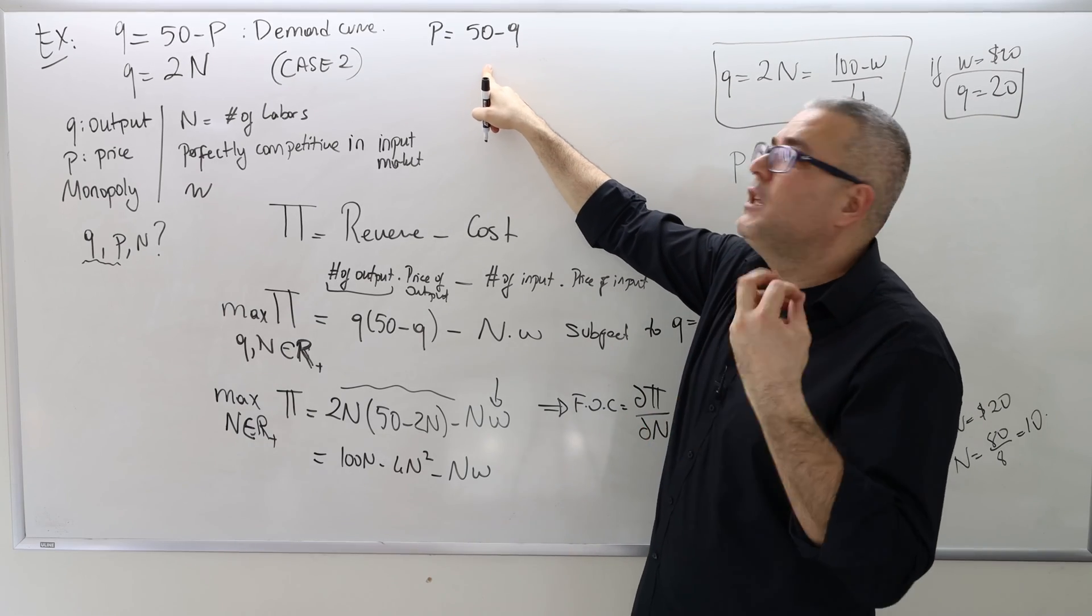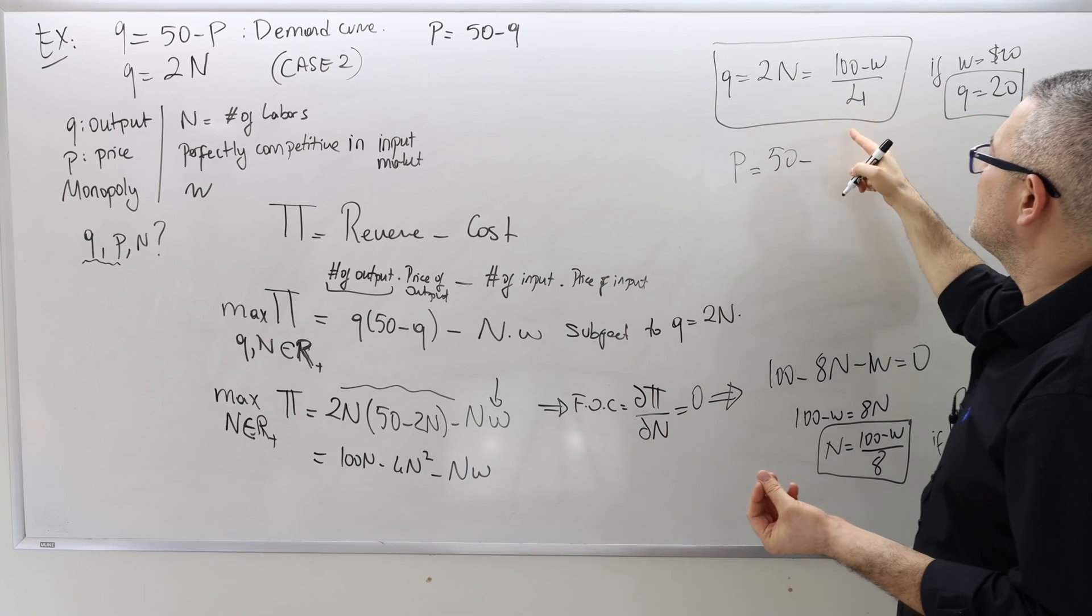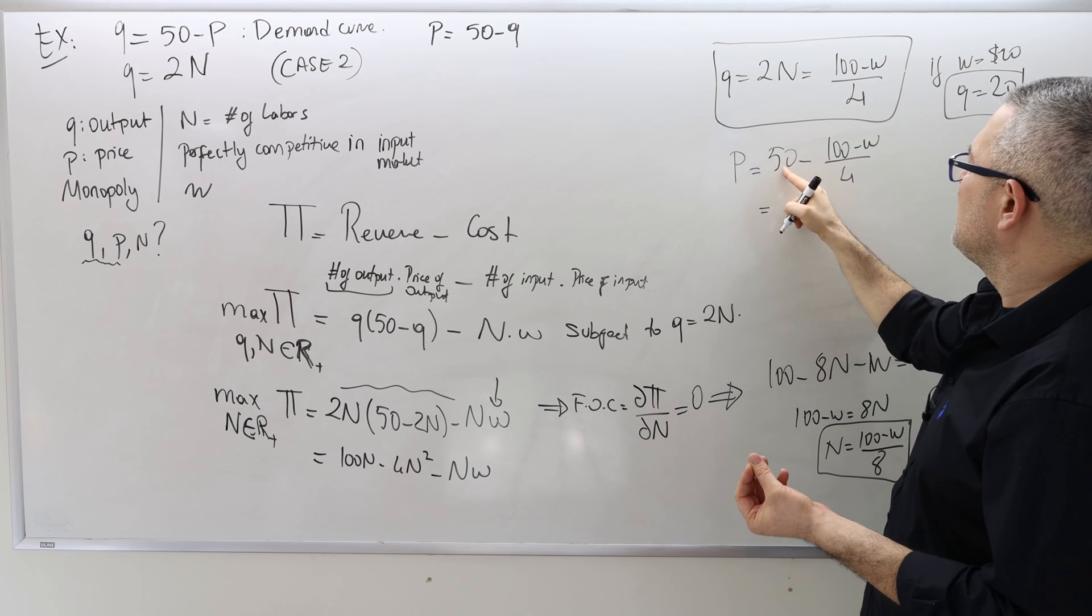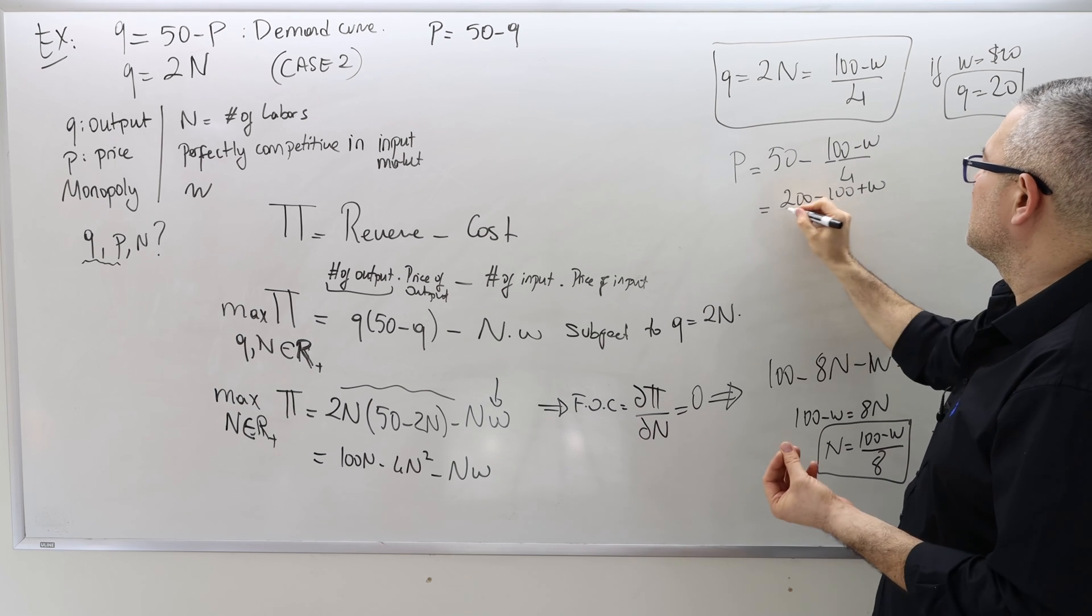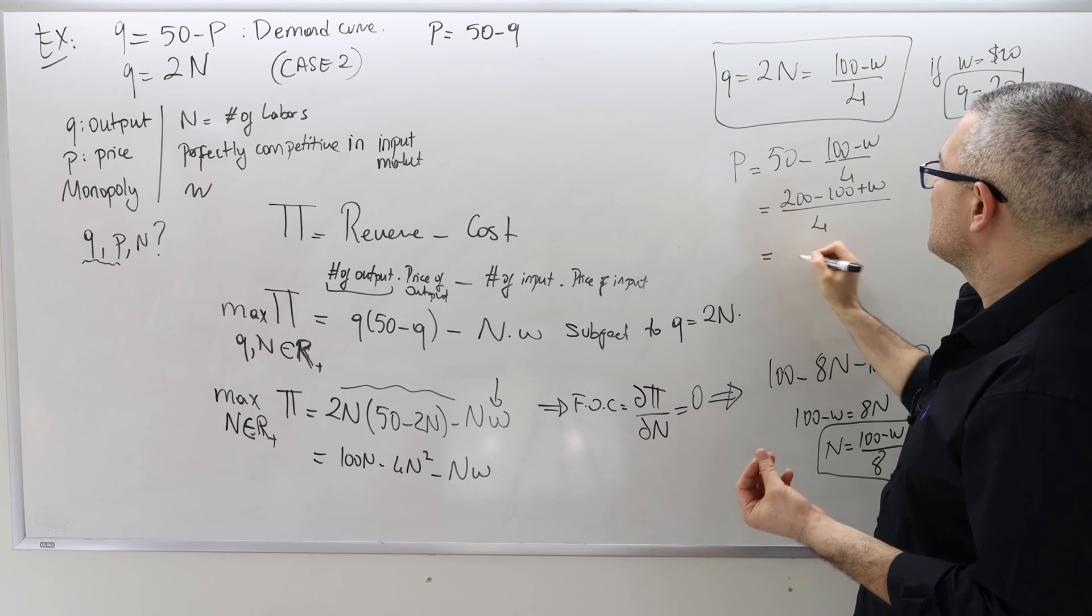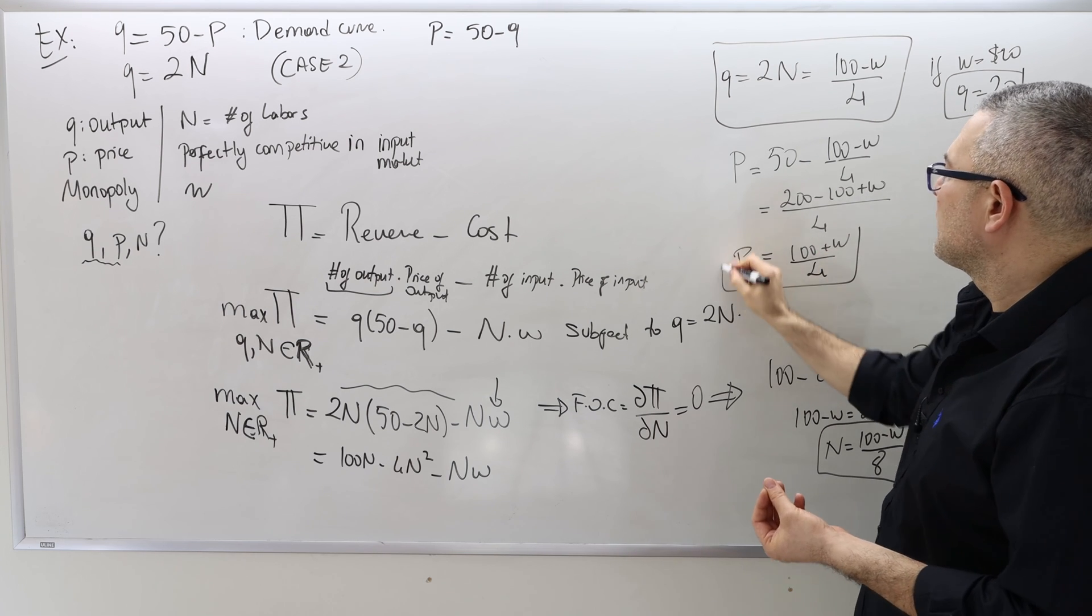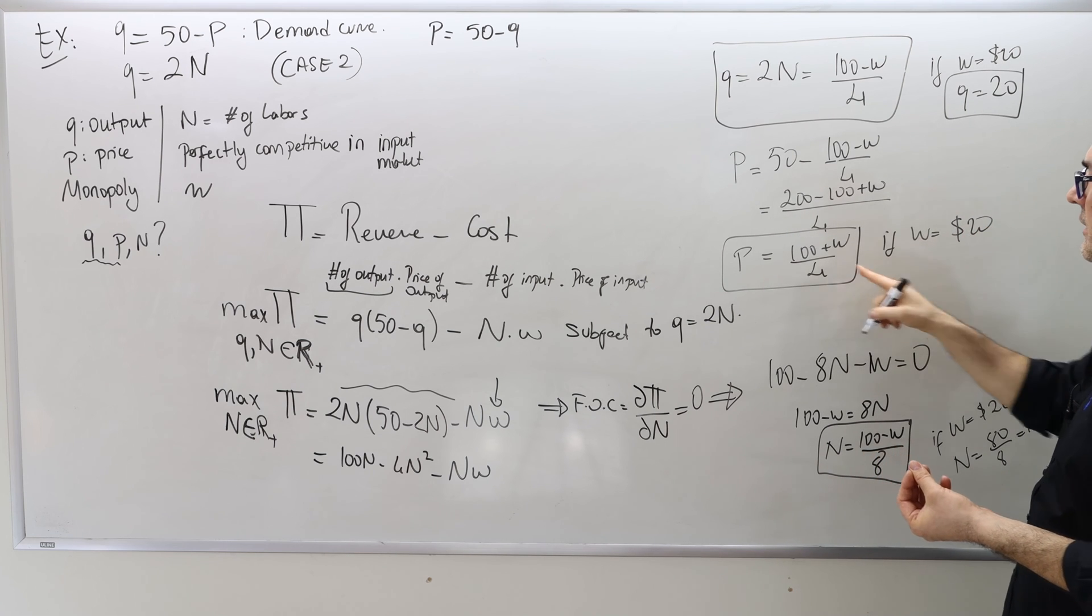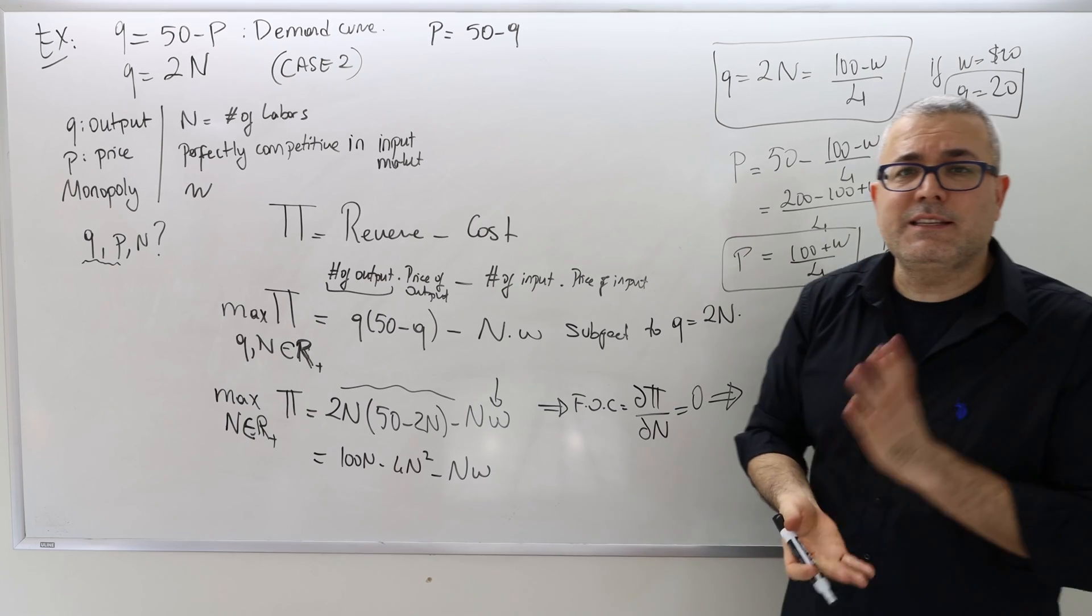And finally, what is P? Well, to find P, use the inverse demand curve. 50 minus Q, which is 100 minus W divided by 4. So it's 200 minus W plus—I'm sorry, 100 plus W divided by 4. So therefore, P equals 100 plus W divided by 4. So therefore, if W was $20, well, then P would be 120 divided by 4, $30. That's it.